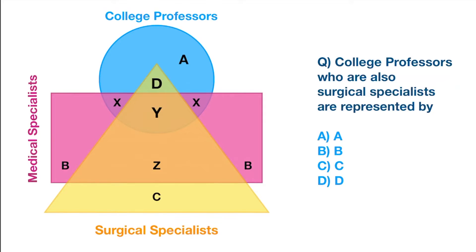Let's try one question. Look at the question. Here we have a circle, which says it's a college professor. Then we have a rectangle, which represents the medical specialist. And then the triangle, which represents the surgical specialist. Now based on this figure, we need to answer the questions. In the diagram, we have some alphabets,